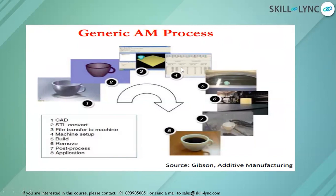After machine setup, the prototype is built by adjusting machine temperature parameters. Once the model is complete, it is removed from the substrate. After removal, post-processing activities take place — for example, support structures used to cover overhangs or intricate holes are removed. Once post-processing is done, surface finishing is applied and the part goes to its final application. This is the complete generic additive manufacturing process.